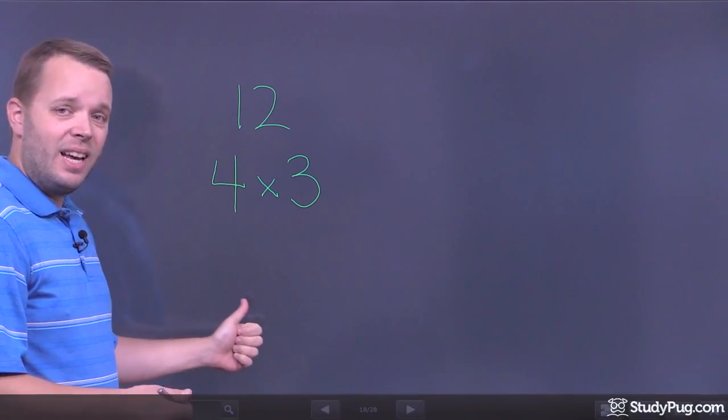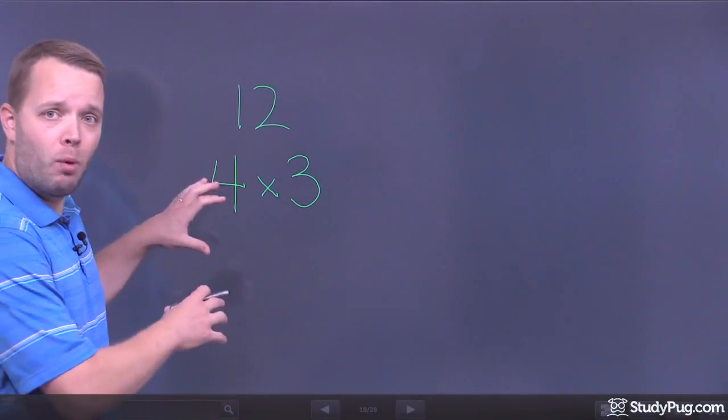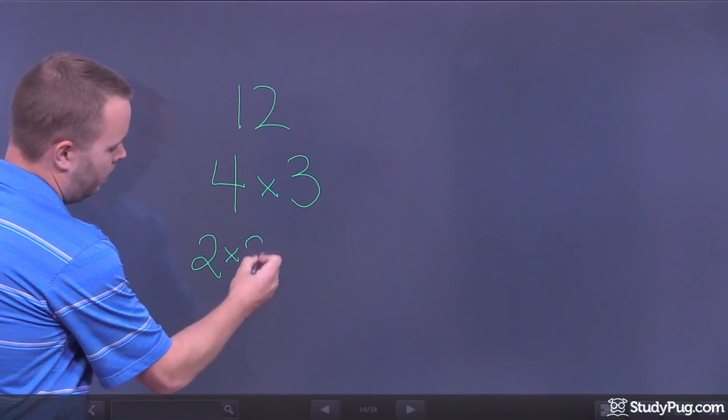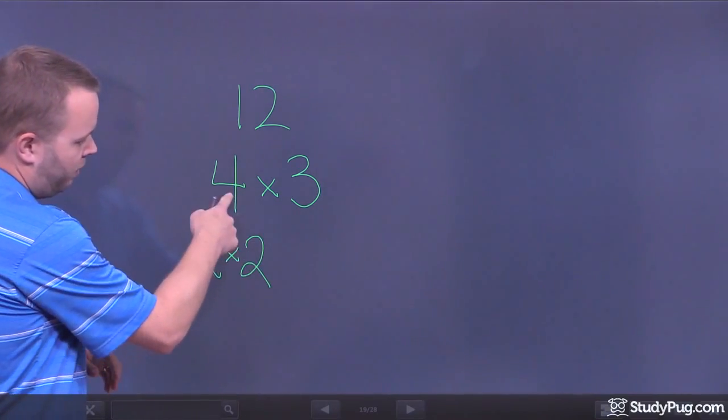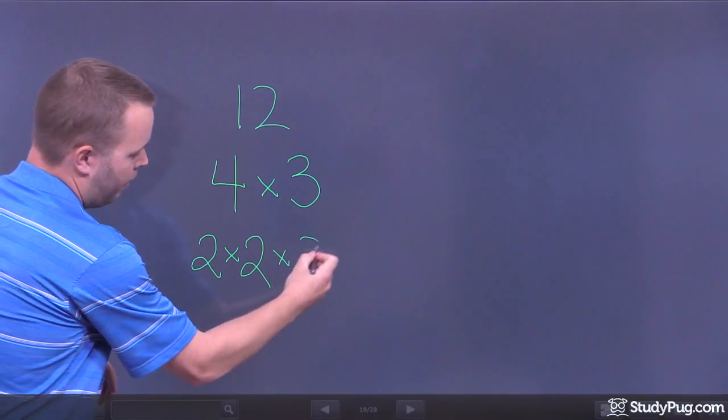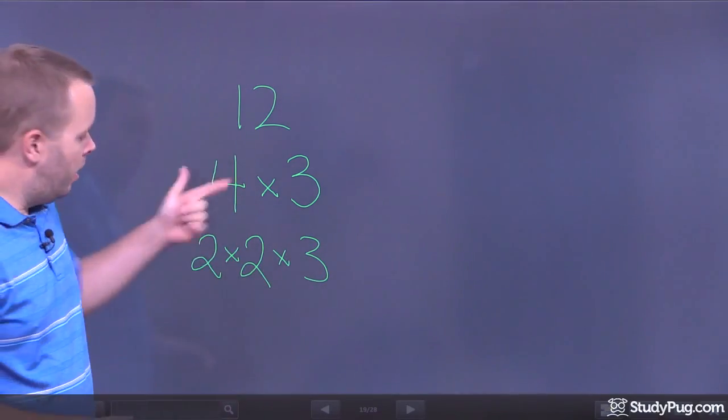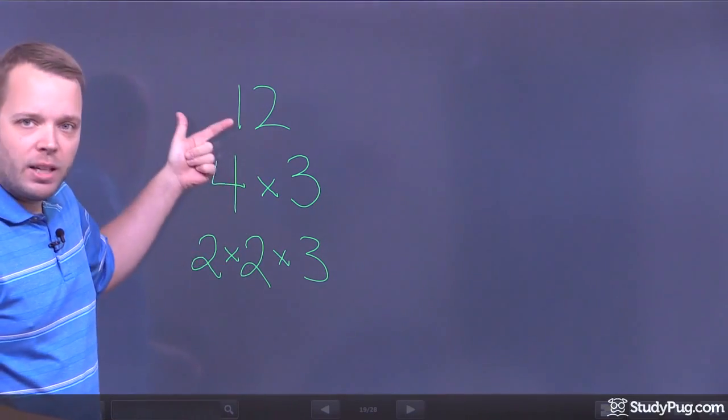So I could take and I could get 4 even smaller. I could break that down into smaller components. 4 is 2 times 2. So 2 times 2 is 4, and now I also have 3. 2 times 2 times 3 is equal to 12. This is considered the prime factorization of 12.